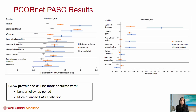This shouldn't be construed as an estimate of PASC prevalence. That will be more accurate with a longer follow-up period and more nuanced PASC definitions. But it starts to become very informative to clinicians as we think about how do we approach PASC, what are the different expressions of PASC, how do we know if a patient in front of us has PASC, and how do we end up with more diagnostic certainty. That's it for me for slides, and I look forward to the discussion ahead.